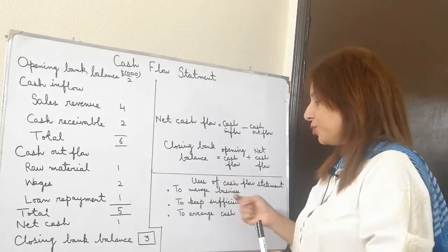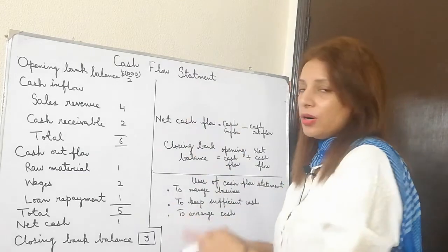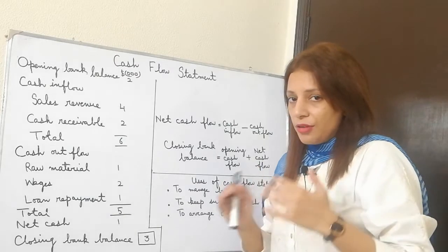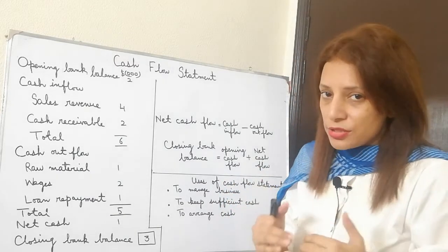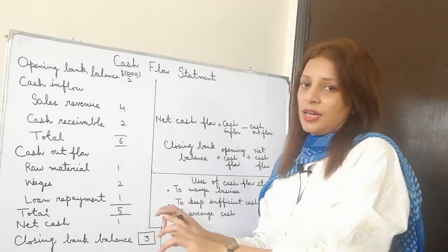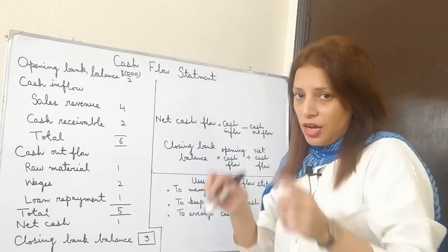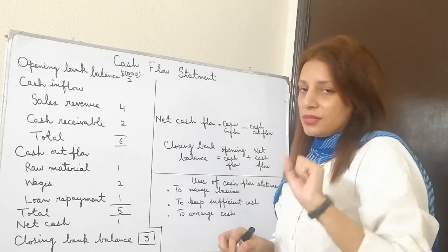So I can keep that money aside. Secondly, to keep sufficient cash. If I have this drawn up properly, I know exactly when I will have cash flow problems, when I will have less cash. So I'll keep some cash aside to pay for any unexpected or additional expenses I have in a specific month.